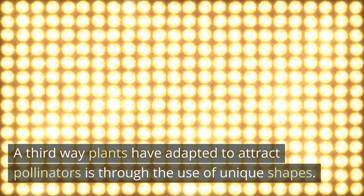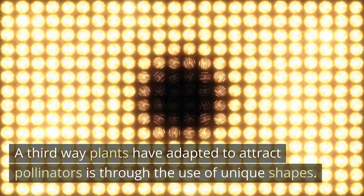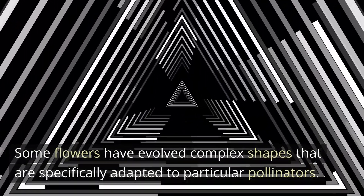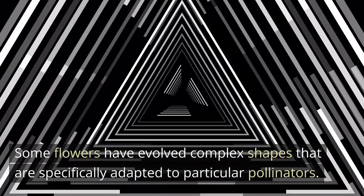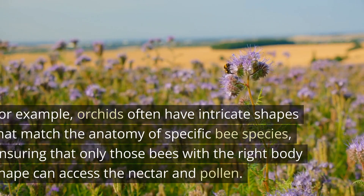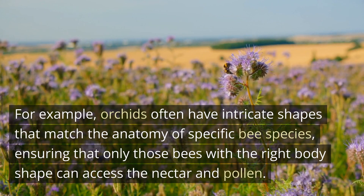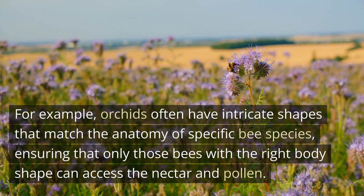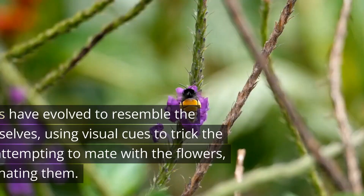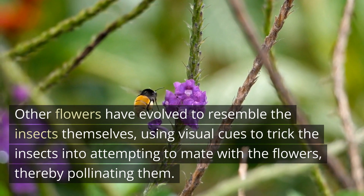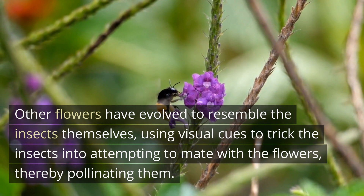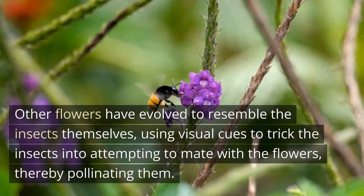A third way plants have adapted to attract pollinators is through the use of unique shapes. Some flowers have evolved complex shapes that are specifically adapted to particular pollinators. For example, orchids often have intricate shapes that match the anatomy of specific bee species, ensuring that only those bees with the right body shape can access the nectar and pollen. Other flowers have evolved to resemble the insects themselves, using visual cues to trick the insects into attempting to mate with the flowers, thereby pollinating them.